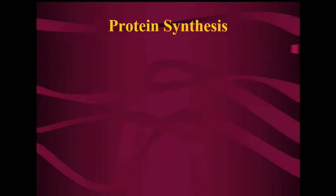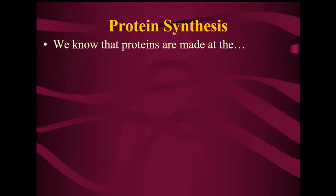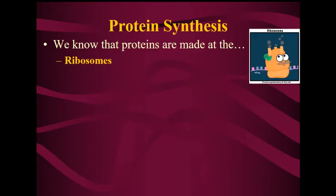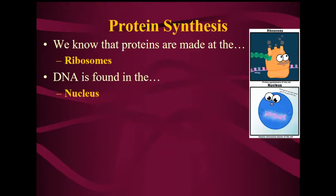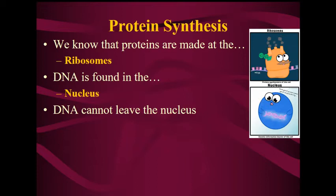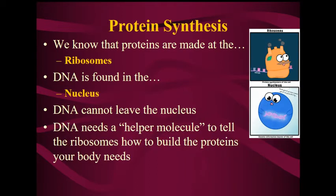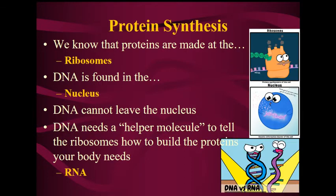For protein synthesis, we know that proteins are made at the ribosomes and DNA is found in the nucleus. DNA can't leave the nucleus, so we have a situation: DNA needs a helper molecule to tell the ribosomes how to build the proteins that your body needs. That helper molecule is RNA.